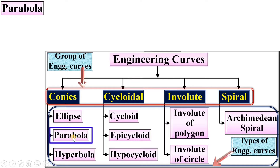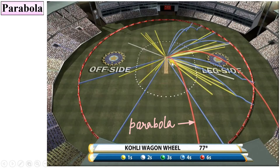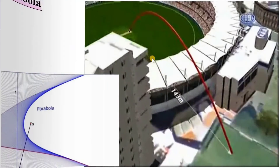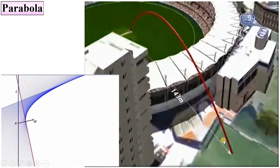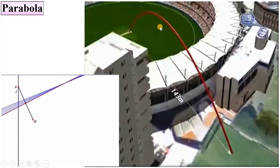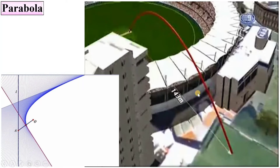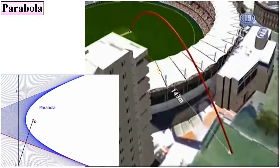Next is the parabola. Here you can see the path, or you can say the locus of the ball — that is known as the parabola. Here you can see this is the horizontal distance covered by the ball and this is the vertical distance covered by the ball. Generally, a parabola is defined by the horizontal distance and vertical distance.